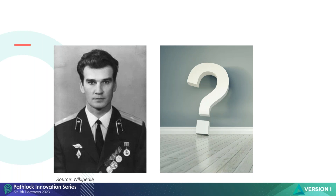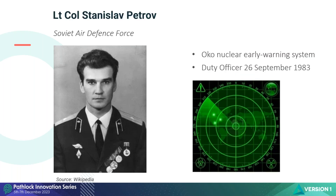This man actually saved the planet — arguably. His name is Stanislav Petrov, and Stanislav Petrov is a Lieutenant Colonel in the Soviet Air Defense Force. In 1983, specifically on the 26th of September 1983, Lieutenant Colonel Stanislav Petrov was in charge of the OCO nuclear early warning base. His responsibilities were to monitor the bank of dashboards looking for inbound missiles from the west, to give early warning to high command that Russia was under attack, and therefore high command would immediately respond with an all-out response, causing nuclear holocaust across the globe.